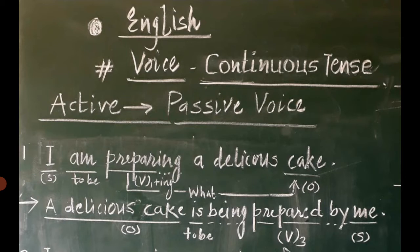Let us take the first example: I am preparing a delicious cake. It is labeled with I as the subject, am as to be's representative for present, and afterwards preparing. The original verb is prepare joined with ing, so V1 plus ing — prepare plus ing equals preparing. A delicious cake. The question is asked: what to the action verb preparing? The answer is cake — a delicious cake. Now all our ideas about the role of every single word in the sentence are clear.